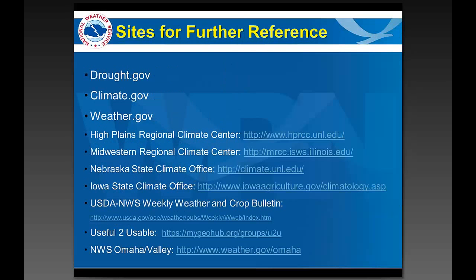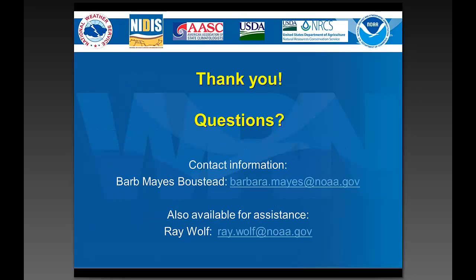Some sites included for further reference: the big government ones are drought.gov, climate.gov, and weather.gov — you'll find lots of information there from local forecasts to climate outlooks to decision support tools. The same is true of the High Plains and Midwestern Regional Climate Centers: the High Plains generally serves Nebraska folks, and the Midwestern generally serves Iowa folks. USDA and a couple other tools are also there. These are here for future reference.